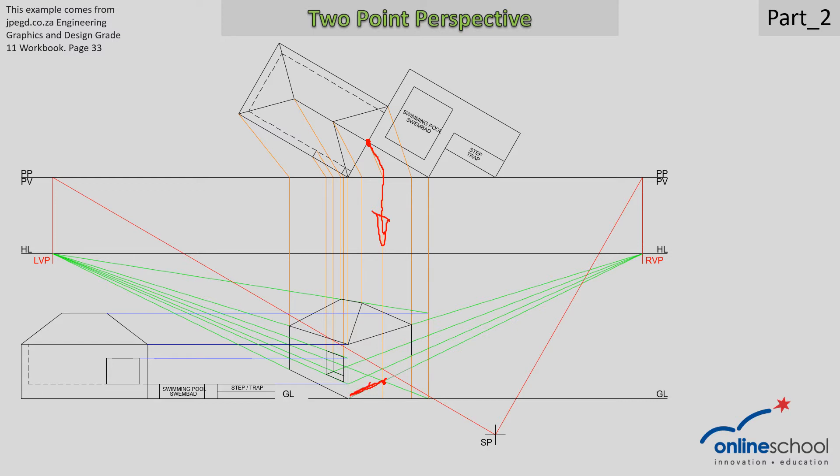So where that intersected with this baseline here at the bottom of my building, I now have that inside corner and I also have this corner of the swimming pool area which touches the picture plane. So if it touches the picture plane it will touch the ground line here because that's the line that I just projected down.